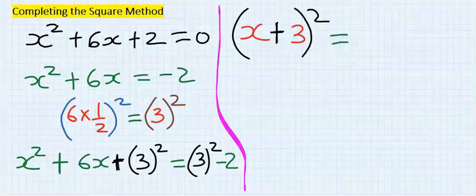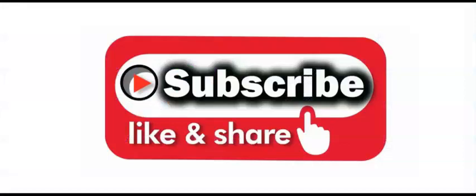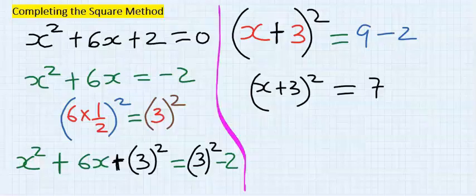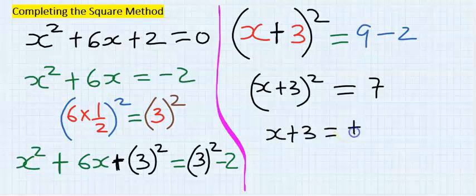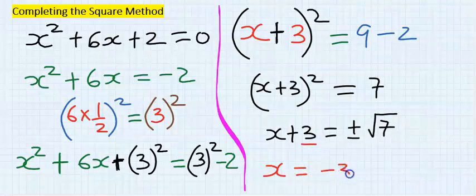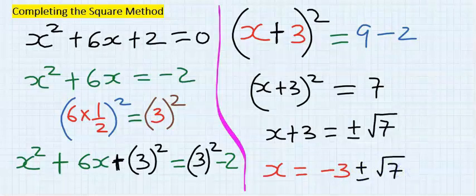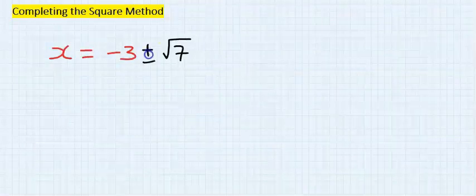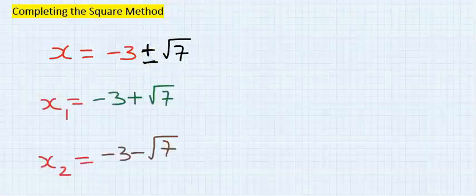On the other side, three squared is nine minus two, which equals seven. Taking off the square on the other side gives plus or minus square root of seven. Isolate x: three moves to the other side to become minus three, giving x equals minus three plus or minus the square root of seven. Our two answers are a plus version and a minus version.